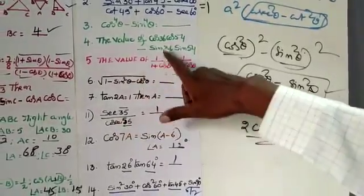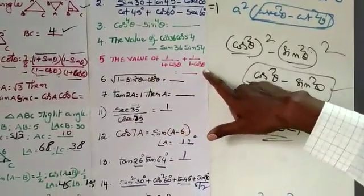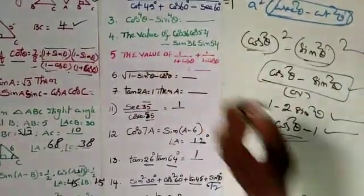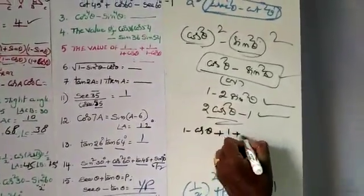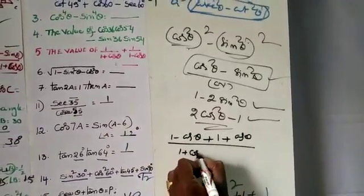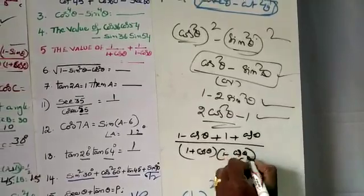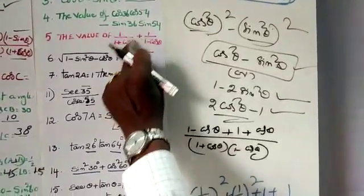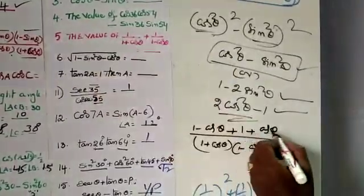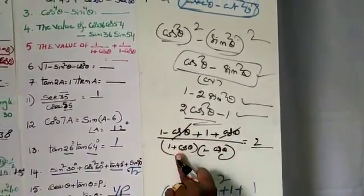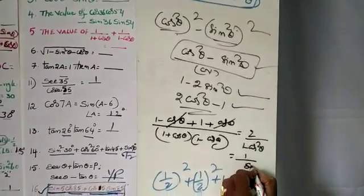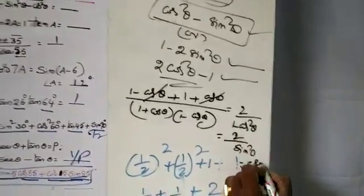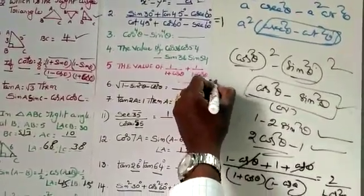Next: the value of 1 by (1 plus cos theta) plus 1 by (1 minus cos theta). Take the LCM. The numerator becomes 1 minus cos theta plus 1 plus cos theta, which is 2. The denominator is (1 plus cos theta)(1 minus cos theta), which equals 1 minus cos squared theta, that is sin squared theta. So 1 by sin squared theta gives cosec squared theta, and the answer is 2 cosec squared theta.